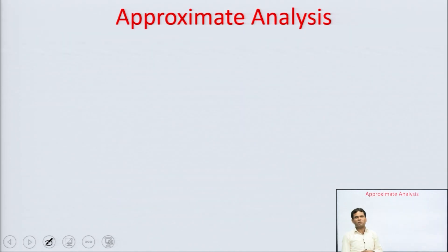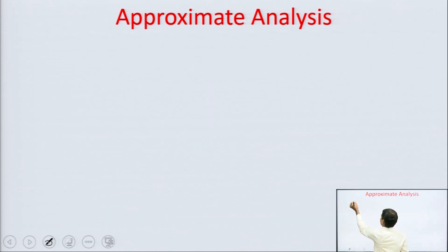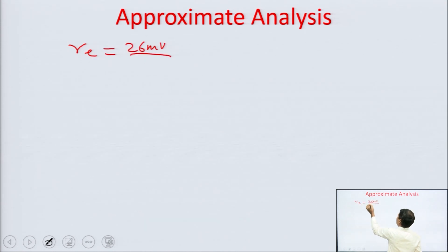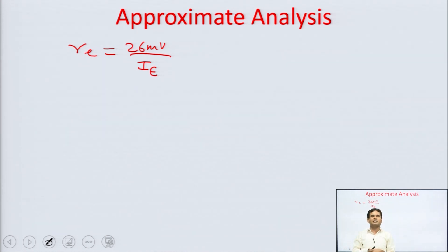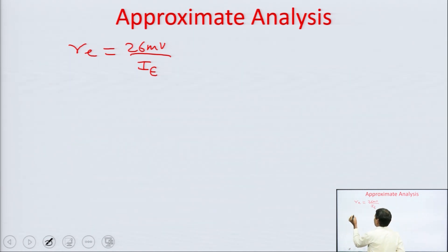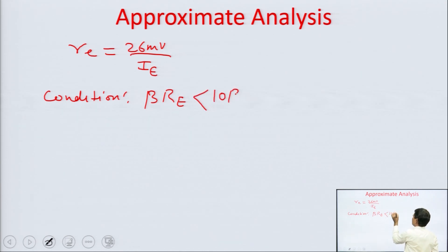Now I am going to discuss the approximate analysis of this circuit. When we perform AC analysis for the amplifier circuit, there is an re model in which we need to find the emitter diode resistance using the formula 26 mV upon IE. To find IE we need DC analysis, which is a lengthy process, so we use approximate analysis to save time. However, approximate analysis cannot always be applied — there is a condition: β·RE should be less than 10·R2.